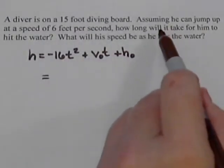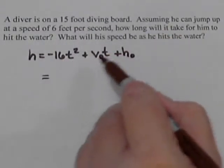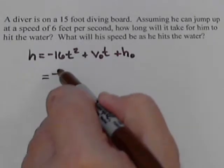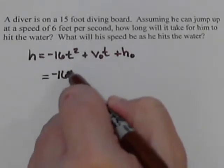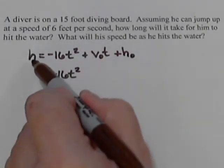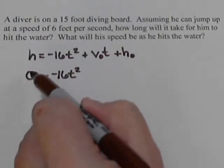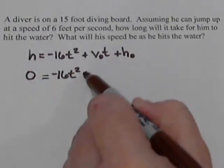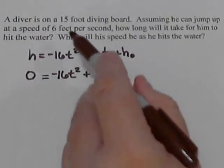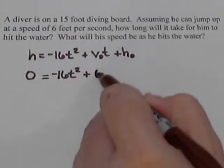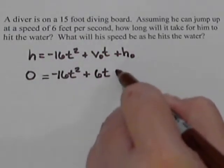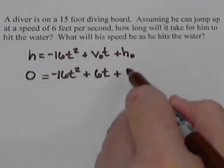We want to know how long it will take to hit the water, so we're looking for the t's. So we have -16t². Our ending height is going to be 0 because he's going to end up in the water. Our initial velocity is just 6, so that goes for the v₀. And our initial height is going to be 15.